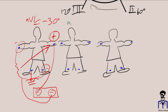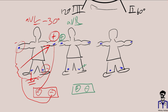For AVR, we make the right arm positive and the average of the other two limbs negative. We draw our lead from the average of the negative toward the positive, and the angle of orientation for AVR is negative 150 degrees.